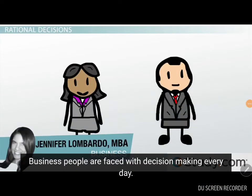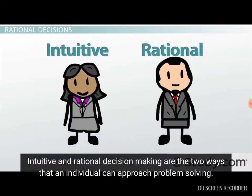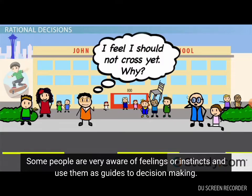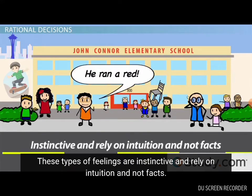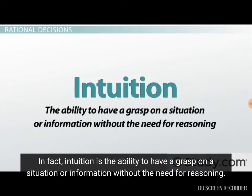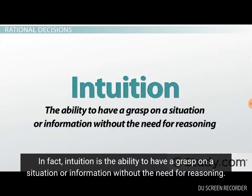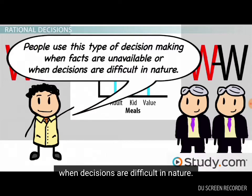Business people are faced with decision-making every day. Intuitive and rational decision-making are the two ways that an individual can approach problem-solving. Some people are very aware of feelings or instincts and use them as guides to decision-making. These types of feelings are instinctive and rely on intuition and not facts. Intuition is the ability to have a grasp on a situation or information without the need for reasoning. In business, people use this type of decision-making when facts are unavailable or when decisions are difficult in nature.